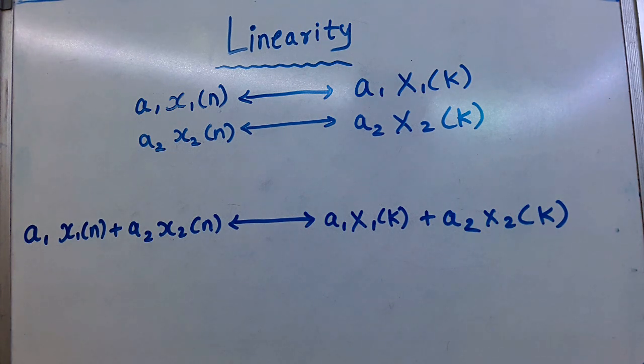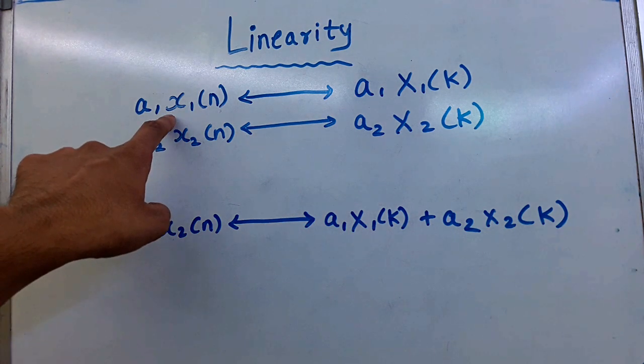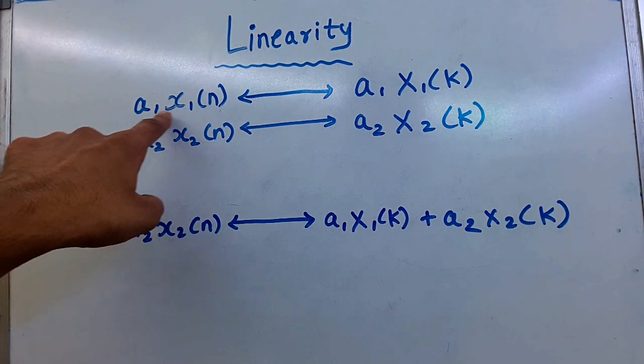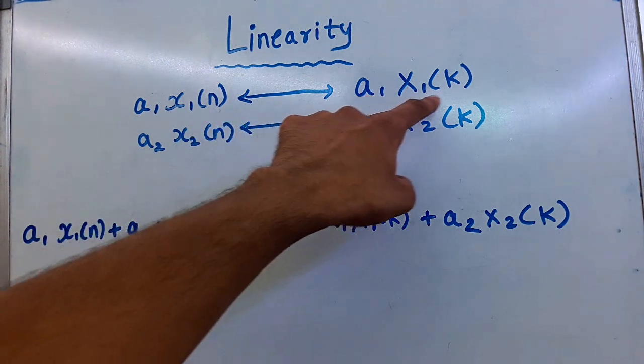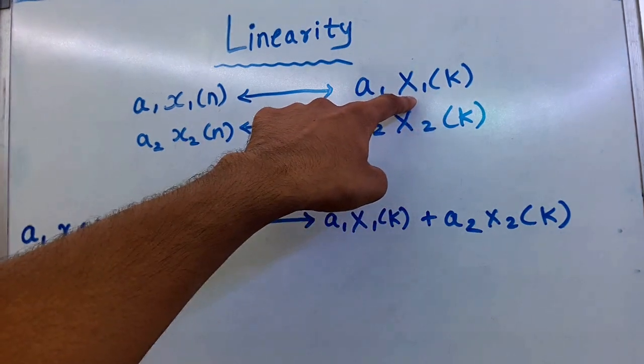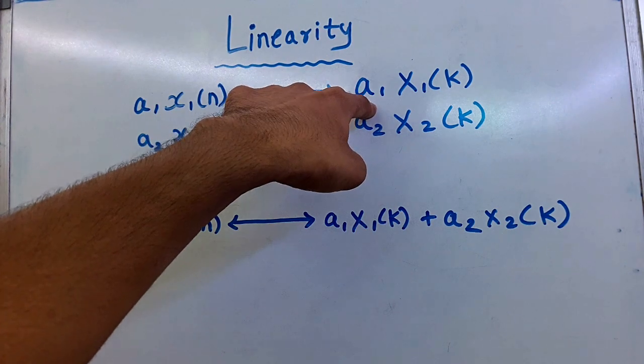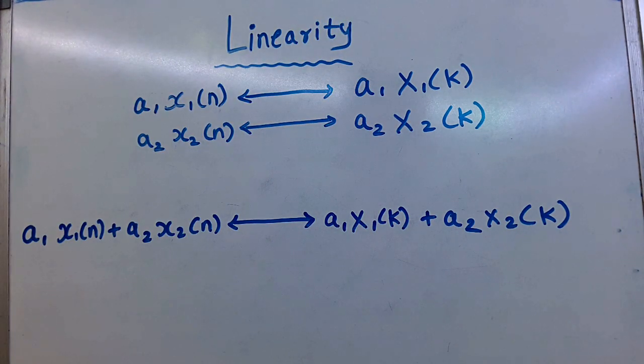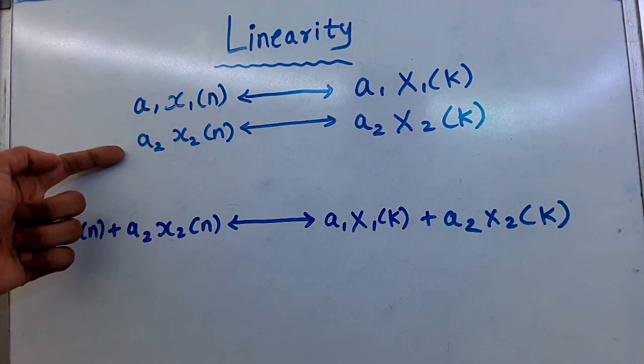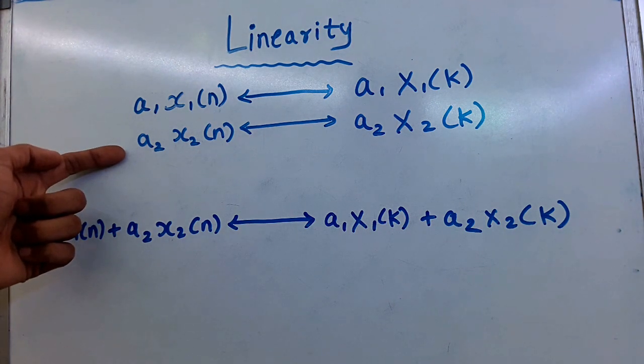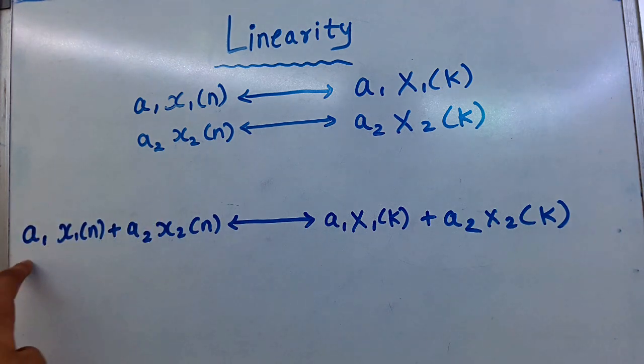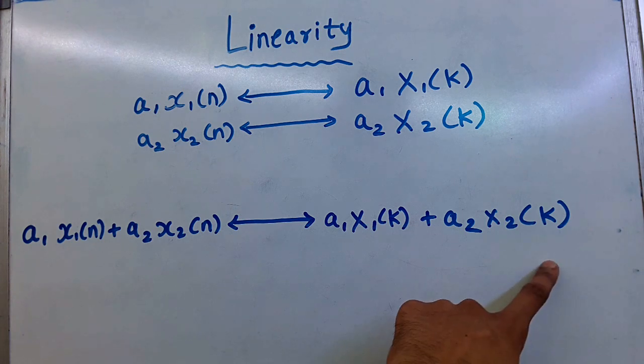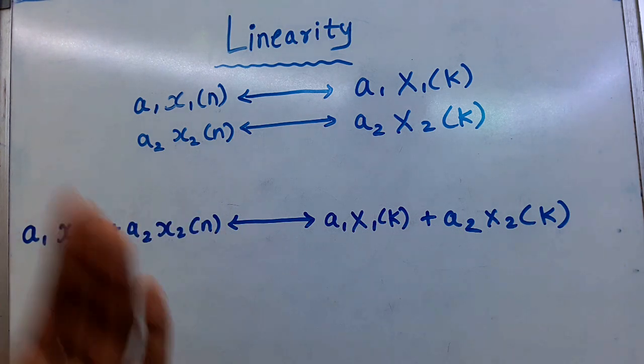Linearity. Consider that we have a time function x1 of n with a constant a1. If we take discrete Fourier transform, then we will get x1 of k in frequency domain with the same constant a1. Now, if we have two functions in the time domain and we sum them, we will get the sum in the frequency domain. This is the linearity property.